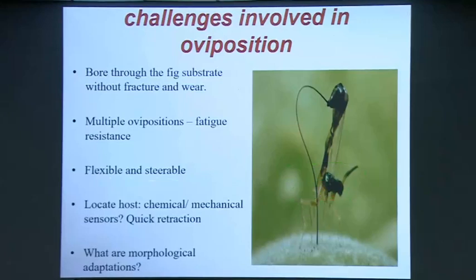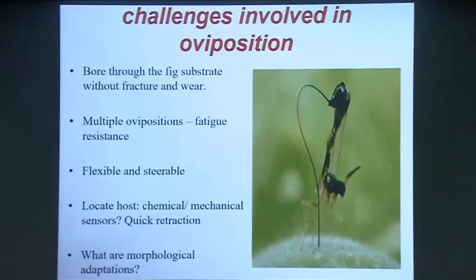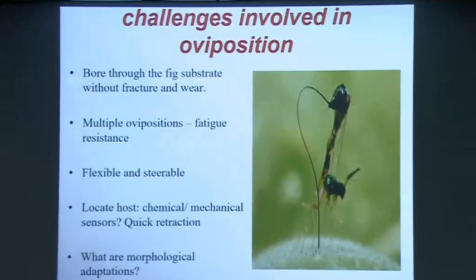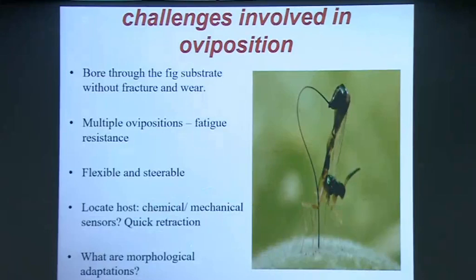The tool has to be very flexible. If you want something very hard, it already kills the idea of having something which is steerable. So you want a tool which is hard enough to pierce, but flexible and steerable so it can navigate inside — and she has no eyes inside. She needs to figure out the good location to oviposit. There must also be quick retraction, because there could be a latex-like sticky substance coming out, and you don't want your tool stuck inside.